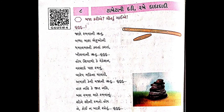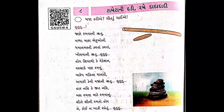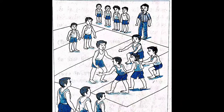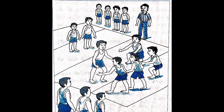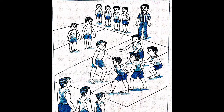ધમાલ મસ્તી કરતા કરતા ખેલવાની ઋતુ હોય, શ્યાળો કે વેકેશન, વર્સાદ - પણ રમ્યા કરે. હવે ચિલ્ડ્રન, 'હુતુ હુતુ' - તમે જાણો છો ને? આ એક પ્રાચીન રમત છે. આ રમત માટે એક નાનકડું મેદાન - એટલે કે એવી નાની જગ્યા - ની જરૂર પડે છે. આ રમતમાં સામાન્ય રીતે એક ટીમમાં સાત ખેલાડીઓ રમી શકે.